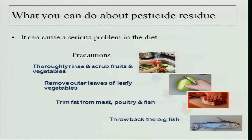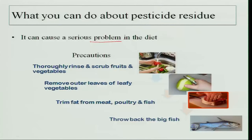What can you do about pesticide residue? Today, vegetables that are grown contain high levels of pesticides. After applying pesticide, farmers should keep the crop for a period of time so that the pesticide residue does not remain on the vegetable, but farmers harvest so fast that the residue remains. This can cause a very serious problem in the diet, so you have to take precautions to remove the pesticides.